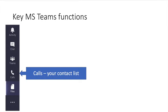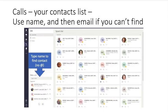Next, I'm going to take you through the key MS Teams functions, beginning with Calls. In MS Teams, think of this as your contact list. When you click on the Calls function, you'll see in the speed dial rectangles containing the contact details of the people that you are in contact with on a regular basis. Microsoft Teams will automatically pull the names of people into this speed dial list. If you can't see the person you want to contact, type their name to find their contact details.